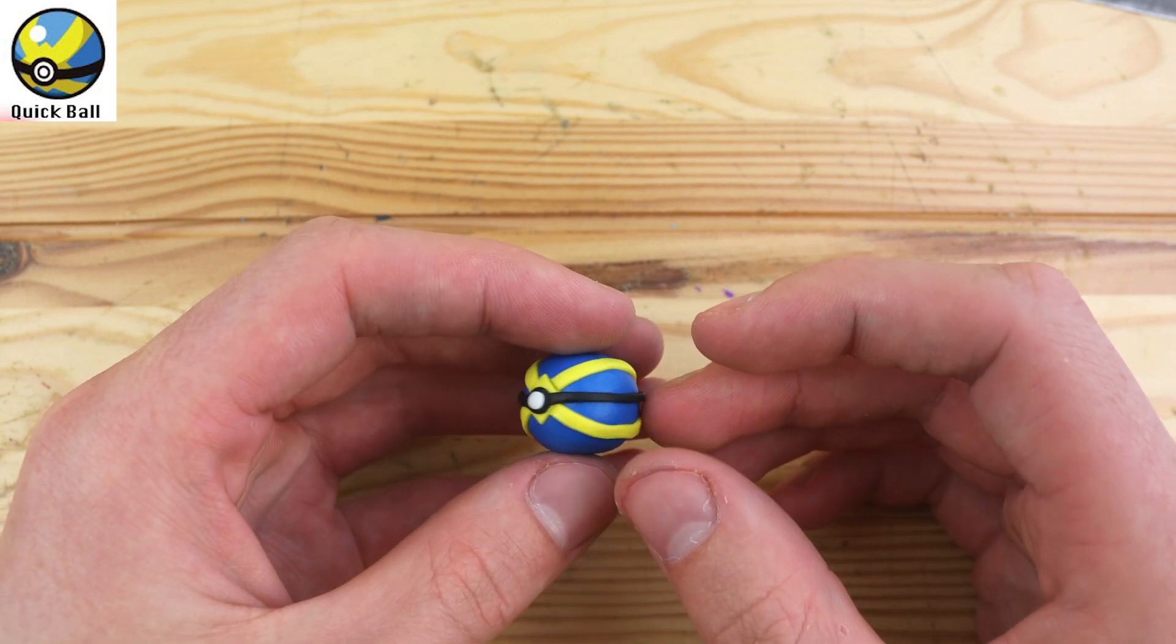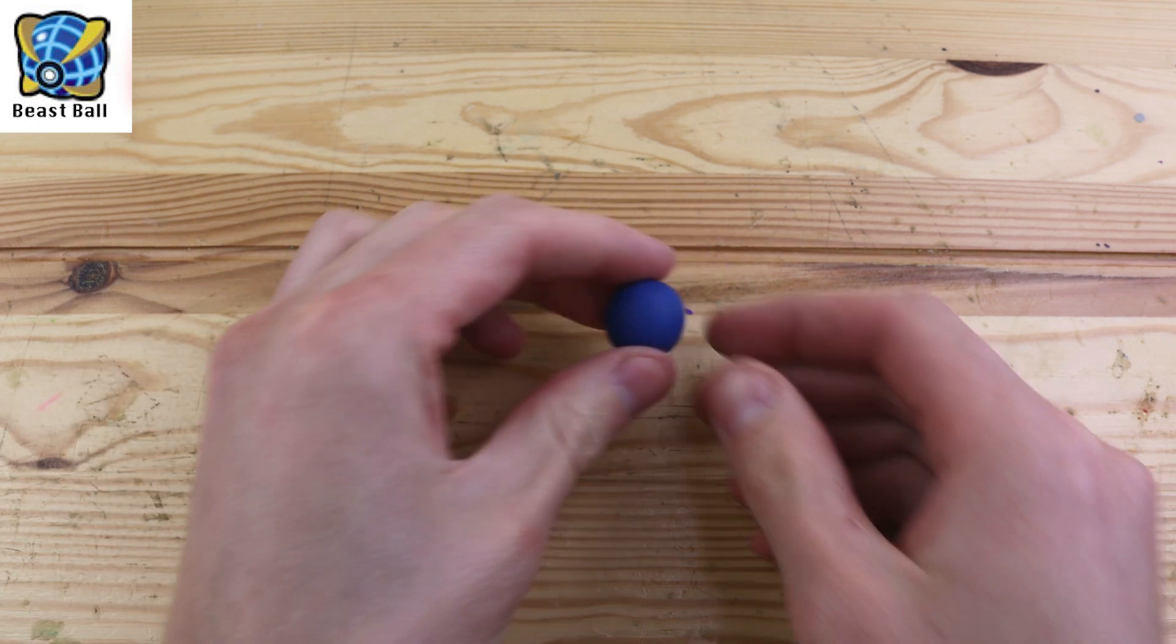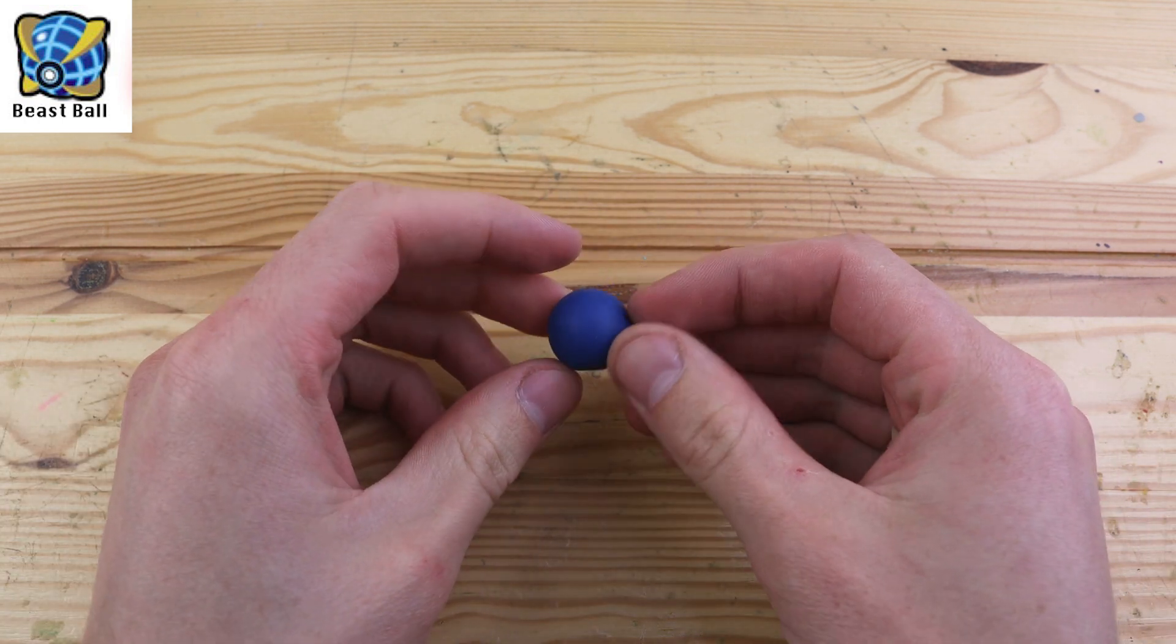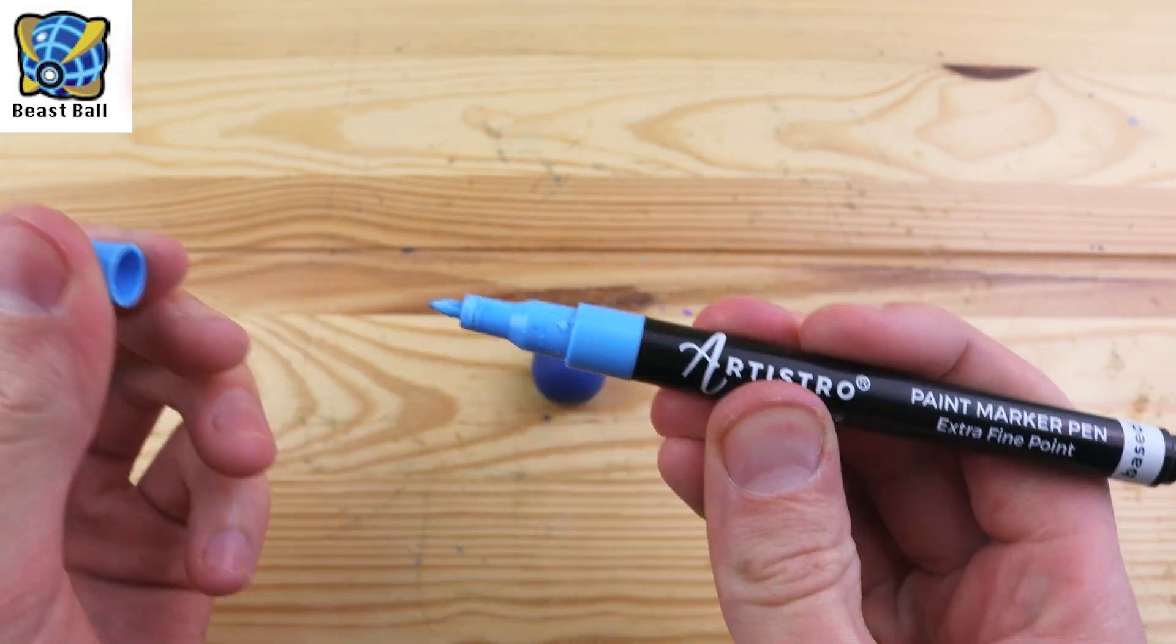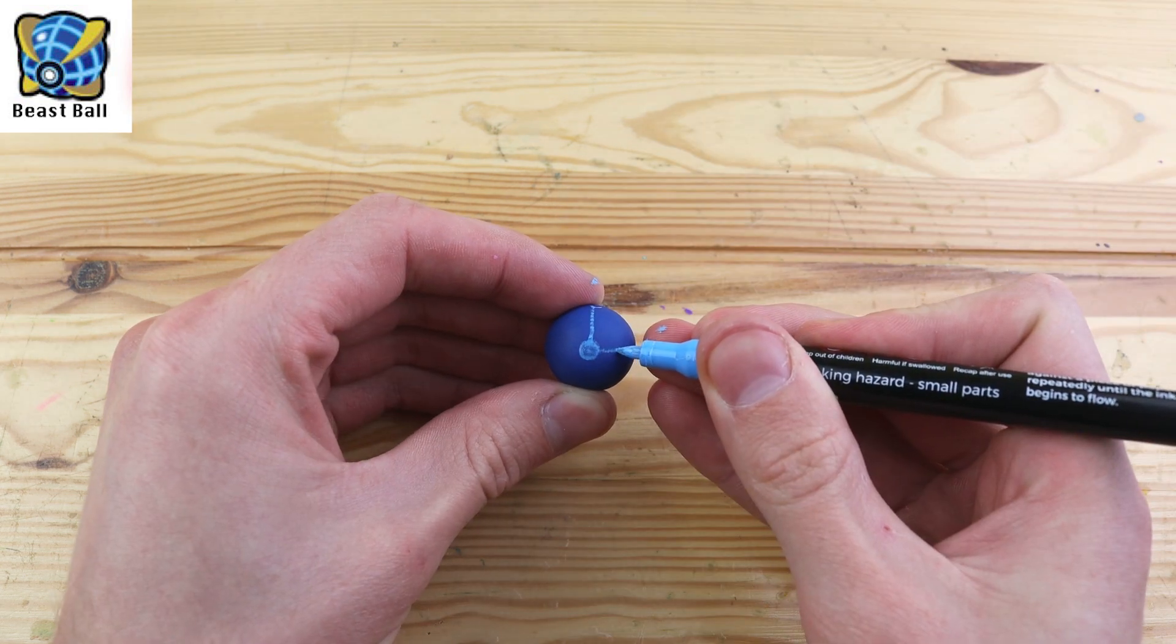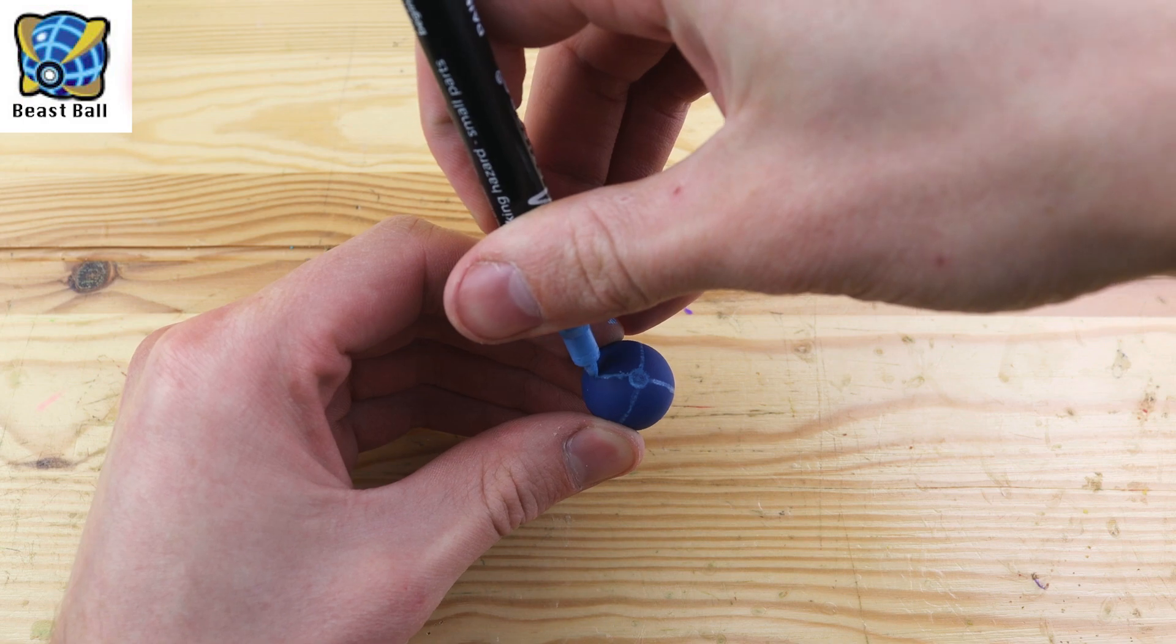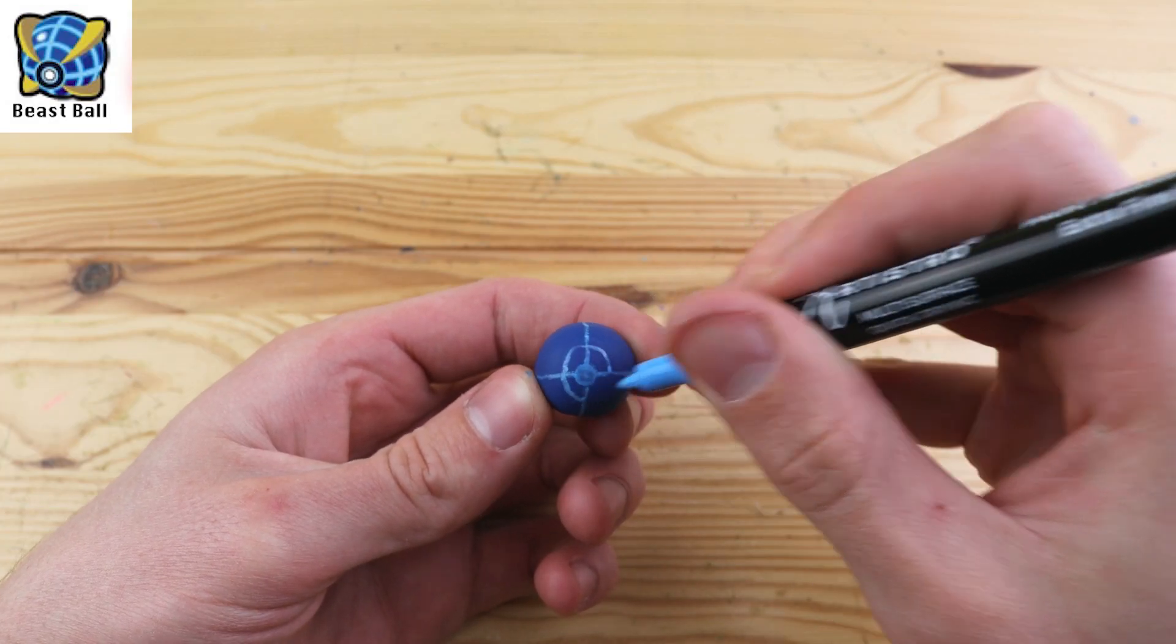Moving on, we have possibly the most complicated design of a Pokéball, the Beast Ball. This one can be used to catch Ultra Beast. You can also catch other Pokémon with it, but the chance is really low so there's not much of a point of using this. I was kind of dreading making this Pokéball because I thought it was going to be extremely messy using little worms of clay. I really don't think it would have worked out.